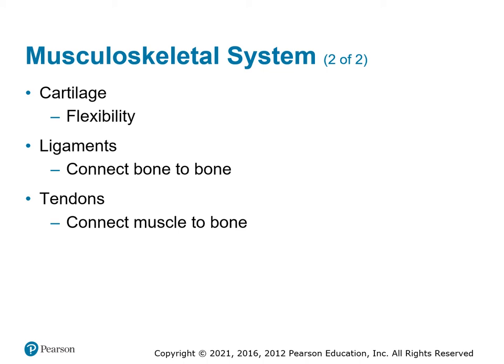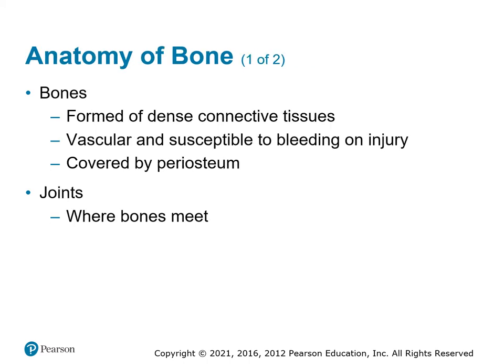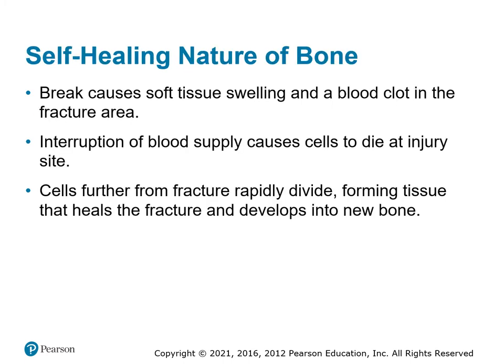What we're going to talk about next is how the different traumas to that system cause problems for the patient and how we provide support to them. The bones are dense connective tissue. They're very vascular. The bone marrow is what produces red blood cells, so we know there's blood flow through these bones. Joints are where they connect together. The bones are pretty good about healing themselves — when you break, they clot, they come together, they start rejuvenating. Sometimes it takes surgical intervention where they put some hardware in to help stabilize the bones so that they can grow together the way they should. But otherwise, the body should heal itself.